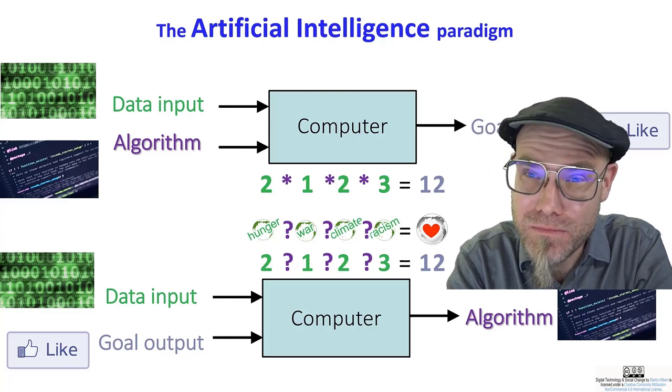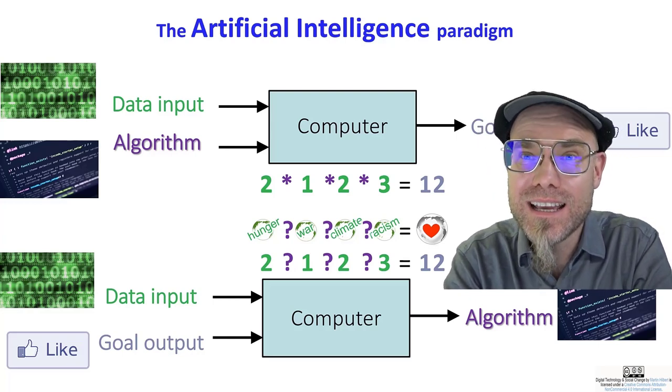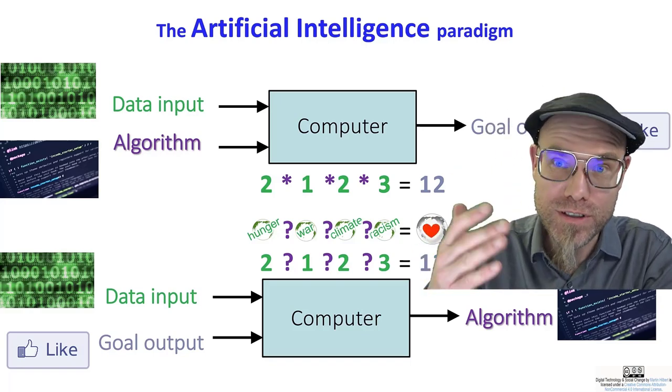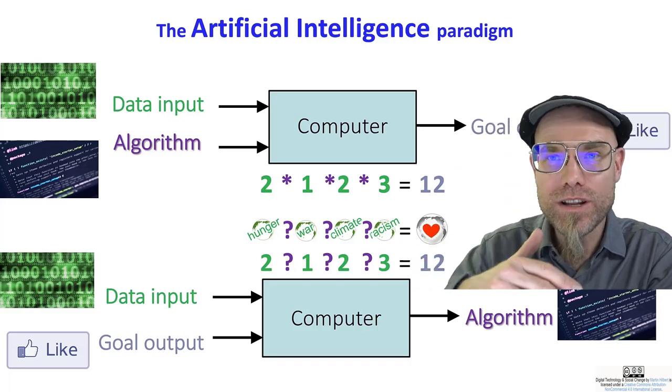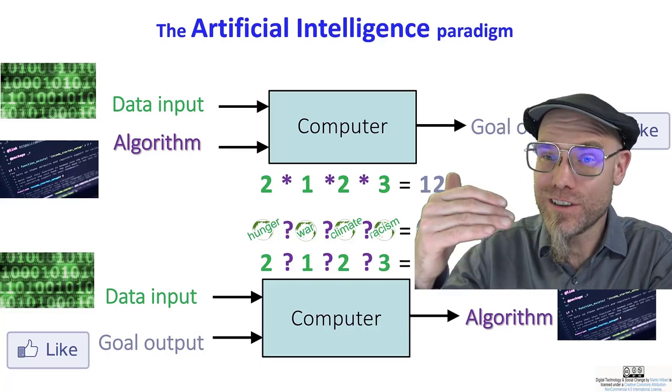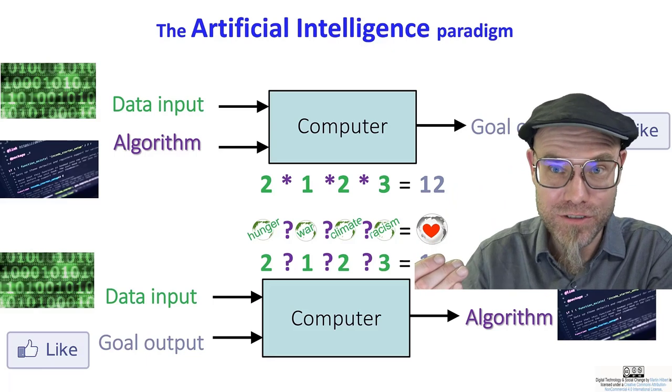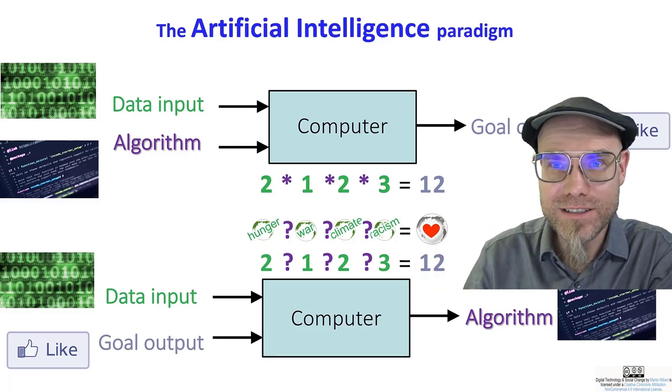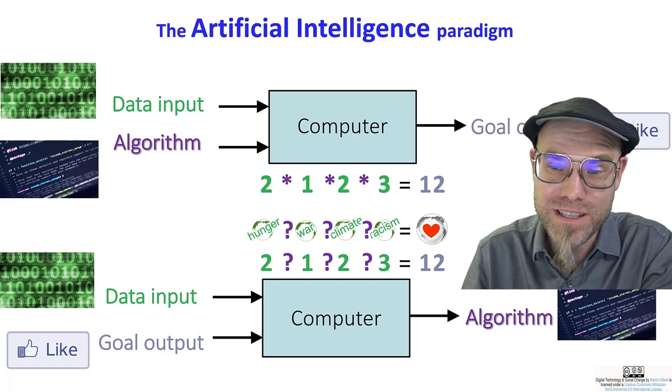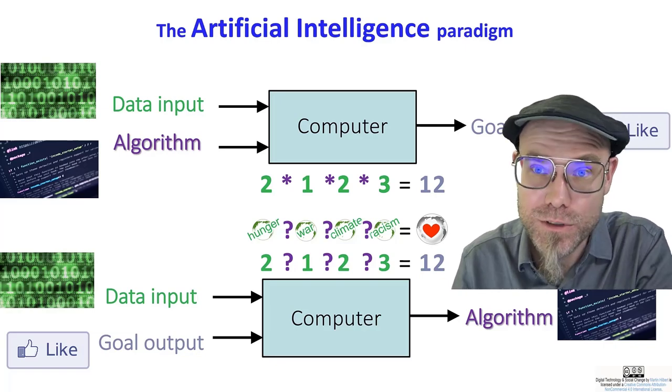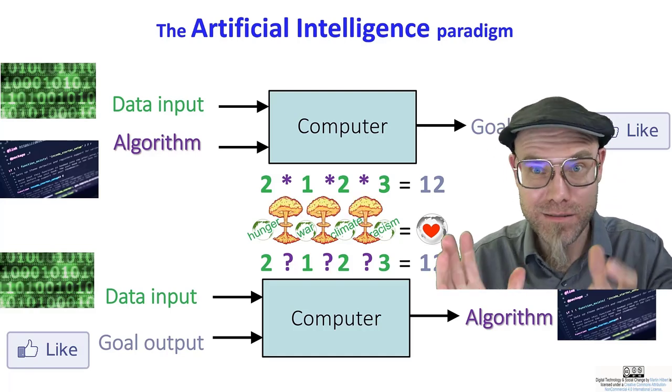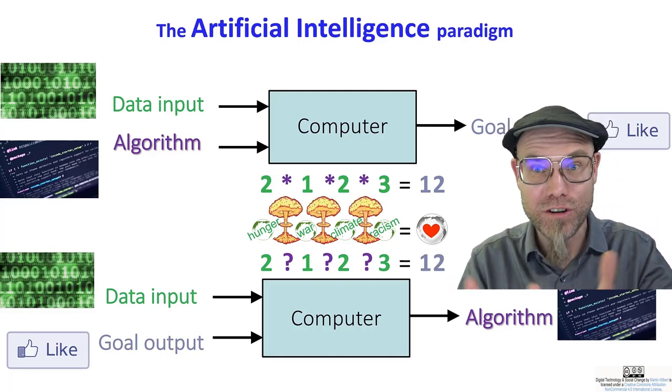Now, the main concern here is that any machine that's intelligent enough to go out of distribution, and that's a technical term, in order to solve problems that we could never solve, could also get to conclusions that we have never foreseen. And maybe the machine gets to the conclusion that, in order to solve all of that, what would be the easiest thing is, for example, to get rid of you and mission accomplished, got rid of the hunger and the climate and the racism problem by getting rid of all humans.